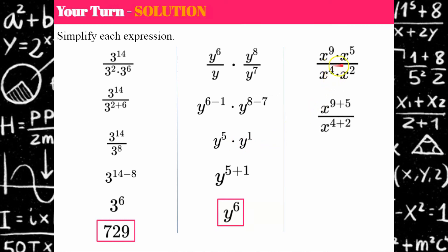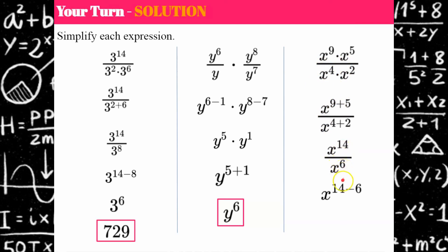For the third problem, I use the product of powers property in the numerator first and add the exponents, and the same in the denominator, giving x to the 14th over x to the 6th. Subtracting my exponents using the quotient of powers property, my final answer is x to the 8th.